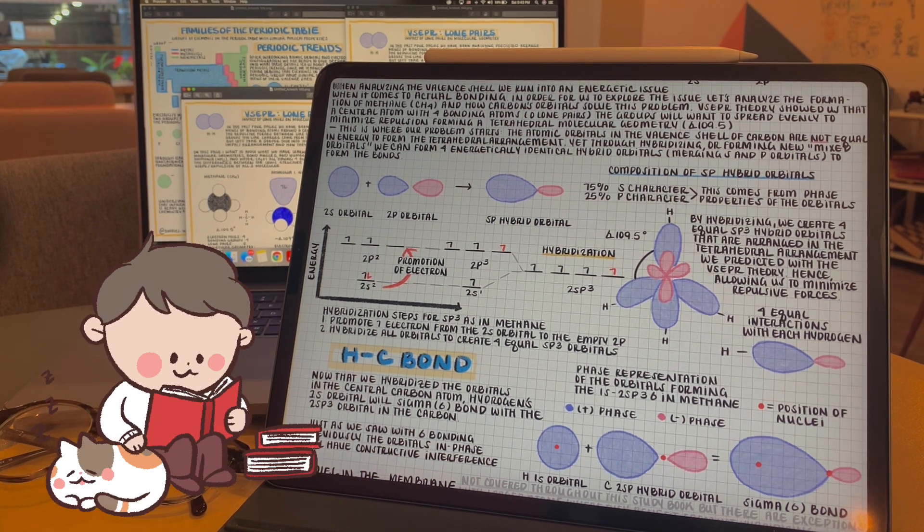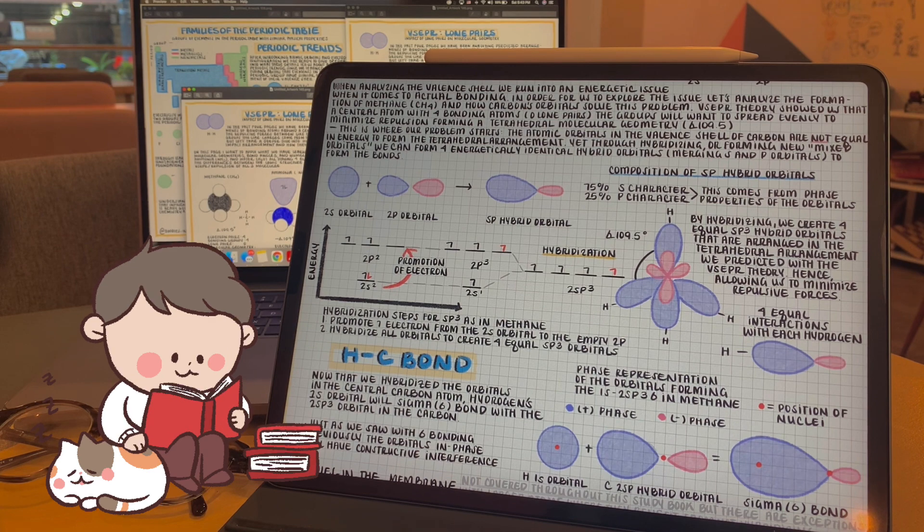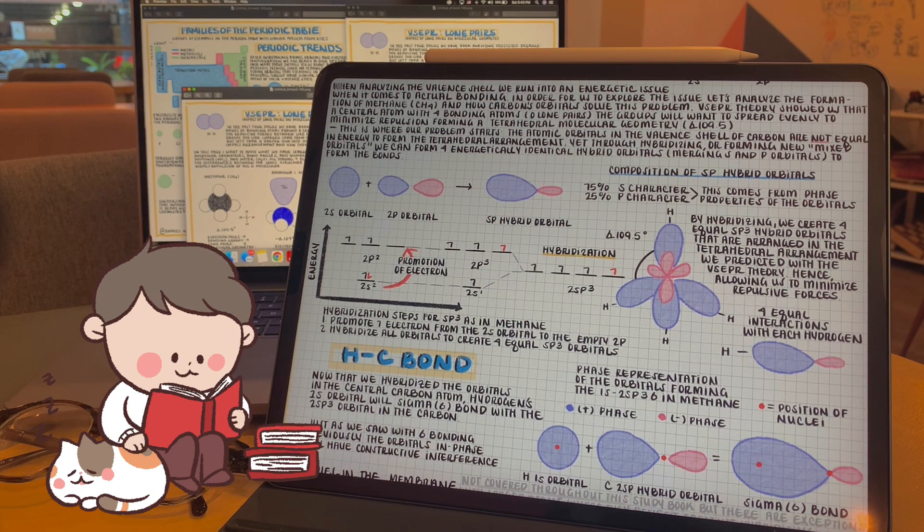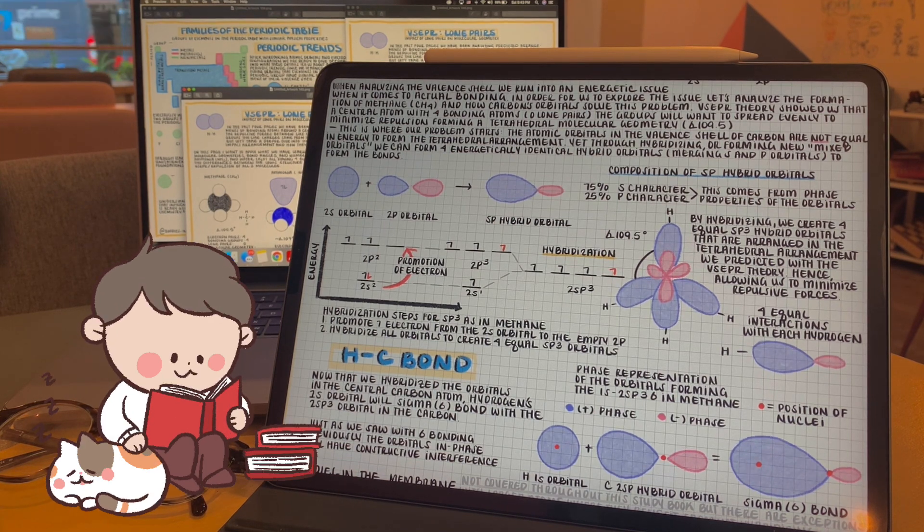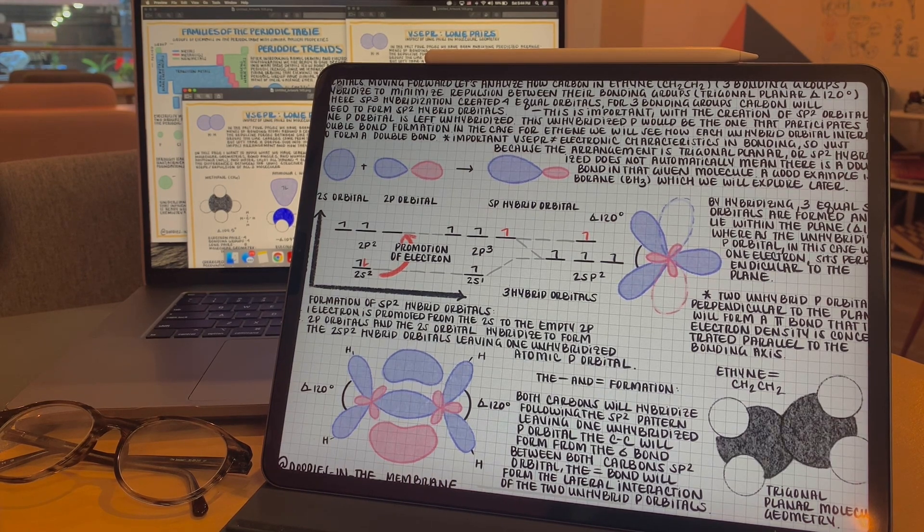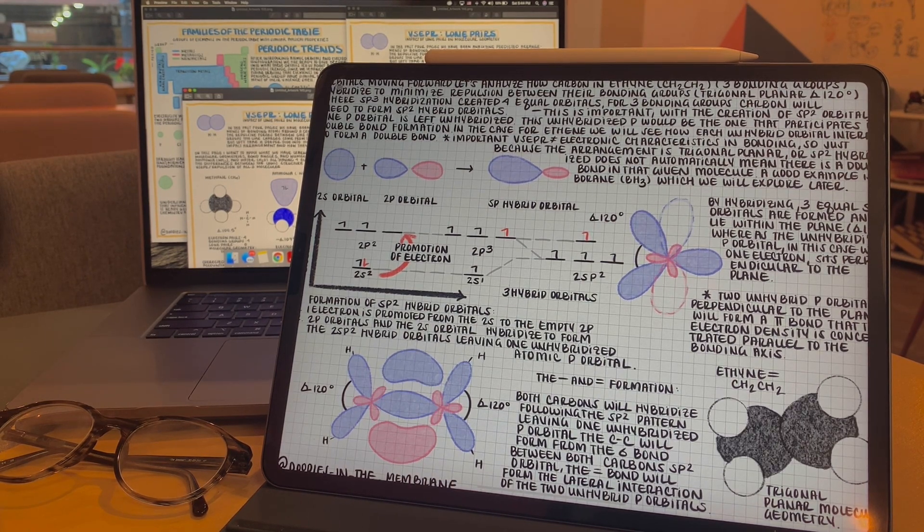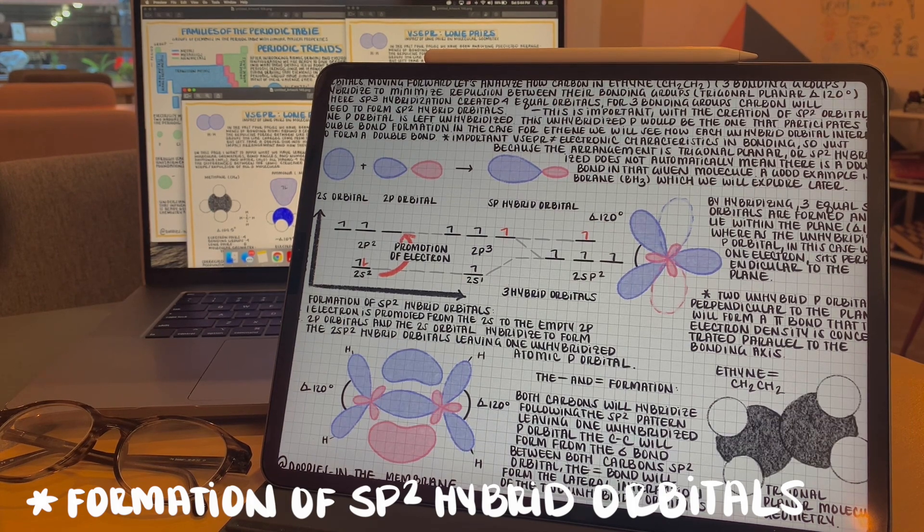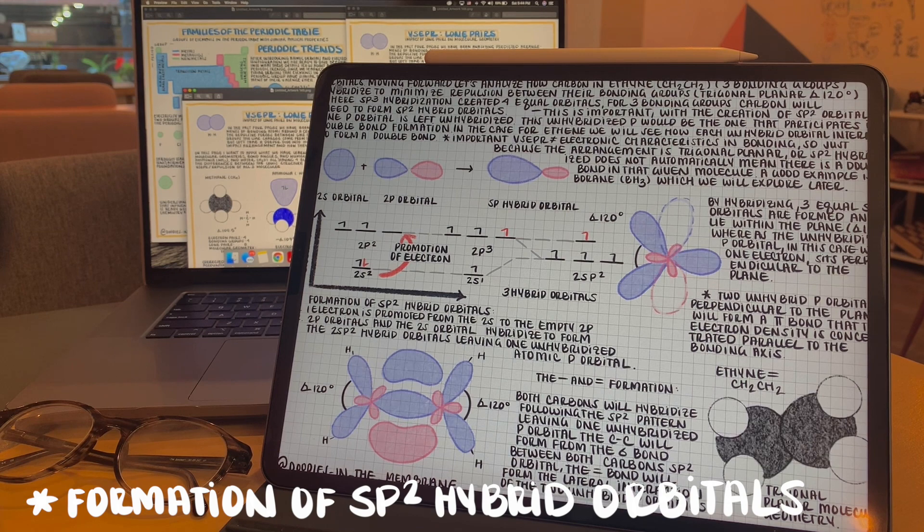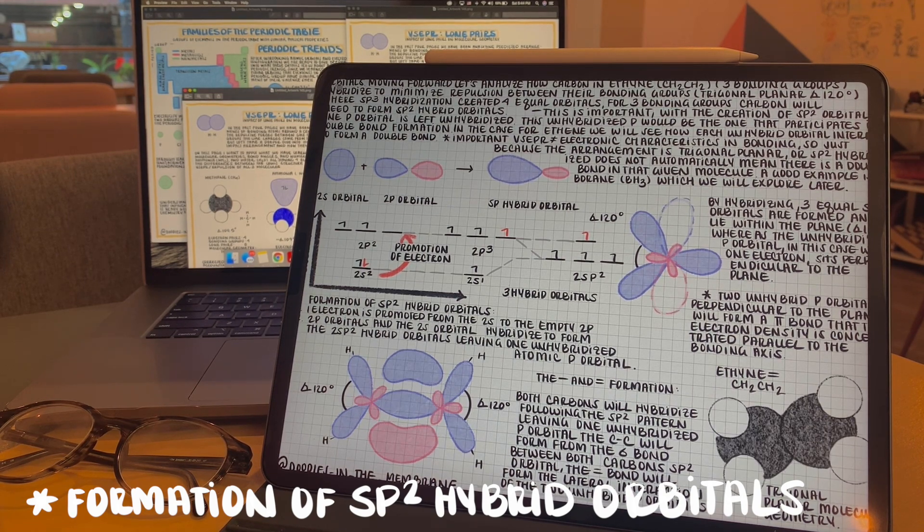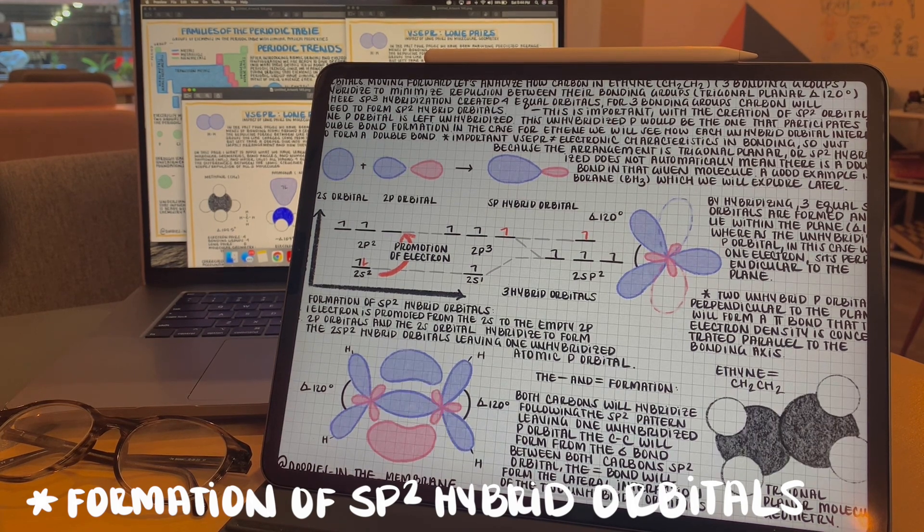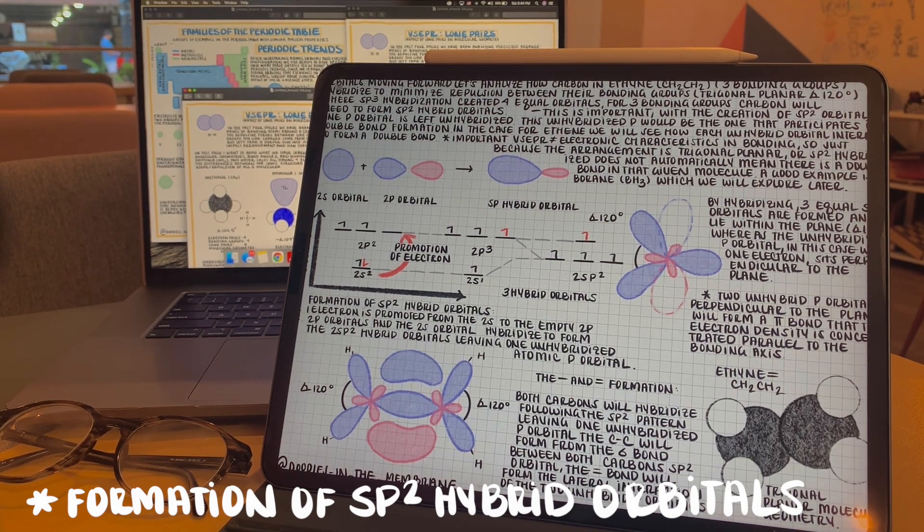Moving forward, I want to talk about the hybridization behind forming trigonal planar geometries and linear geometries, maintaining our reference of carbon for comparison. In this next example, I want to analyze the hybridization of one of the carbons in ethene. In this case, we have three bonding atoms, two hydrogens and one other carbon. So, in the perspective of the carbon we're looking at, we're analyzing that we need to create three energetically equal bonding orbitals for each of the bonding atoms to minimize repulsion between them.